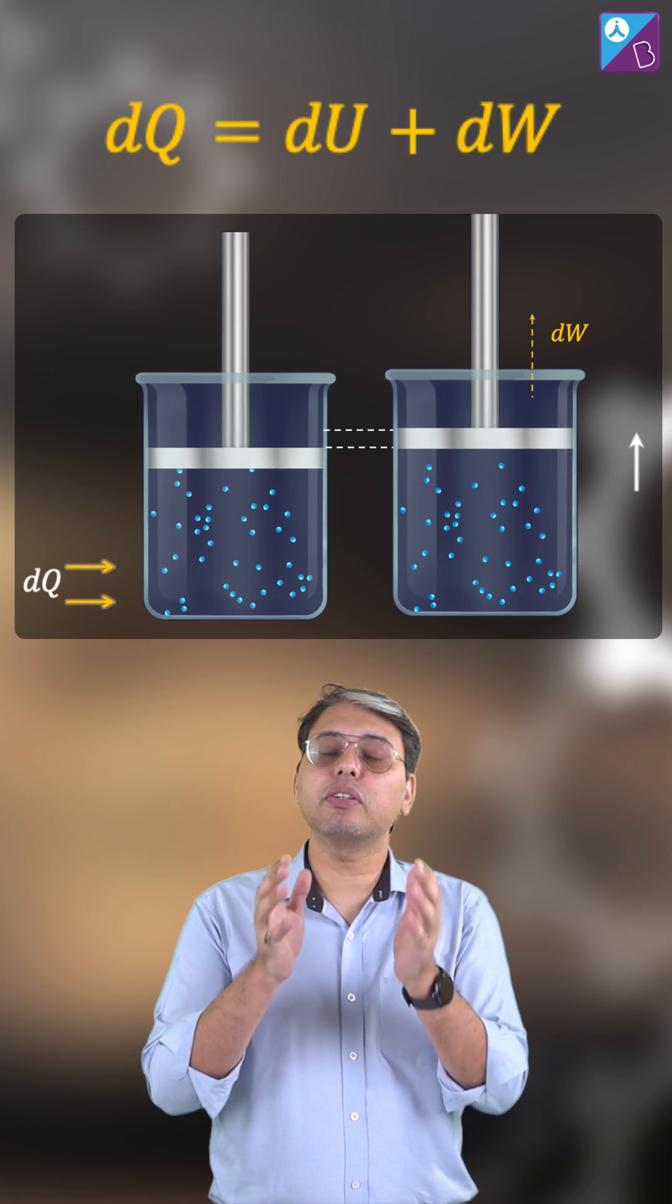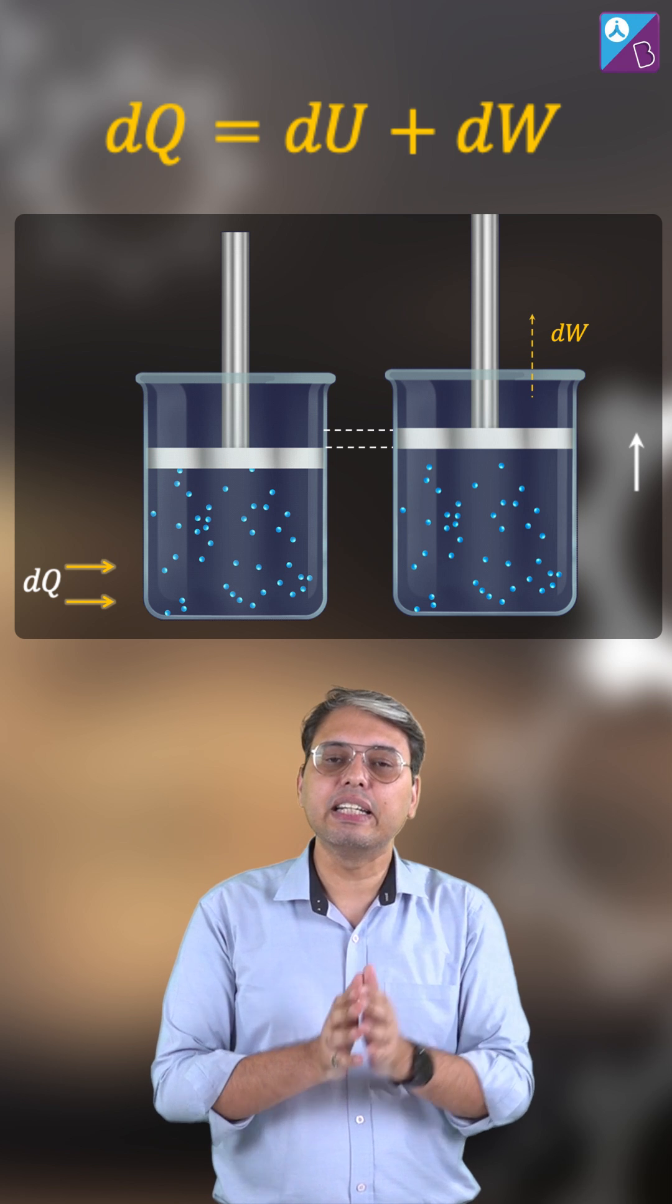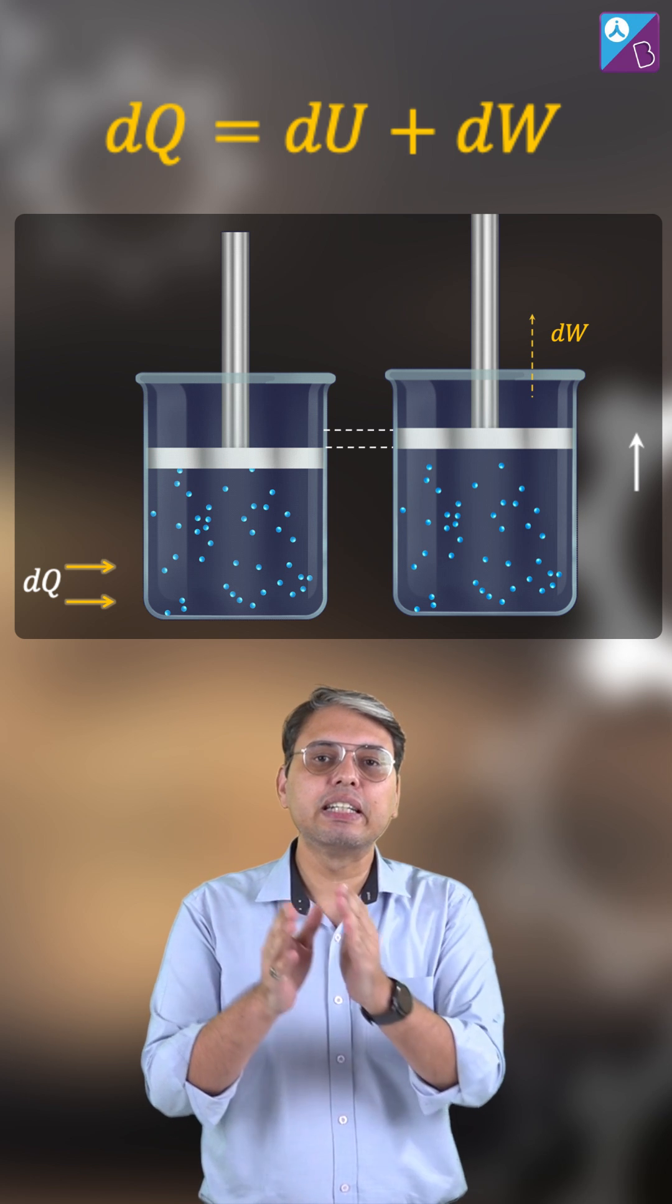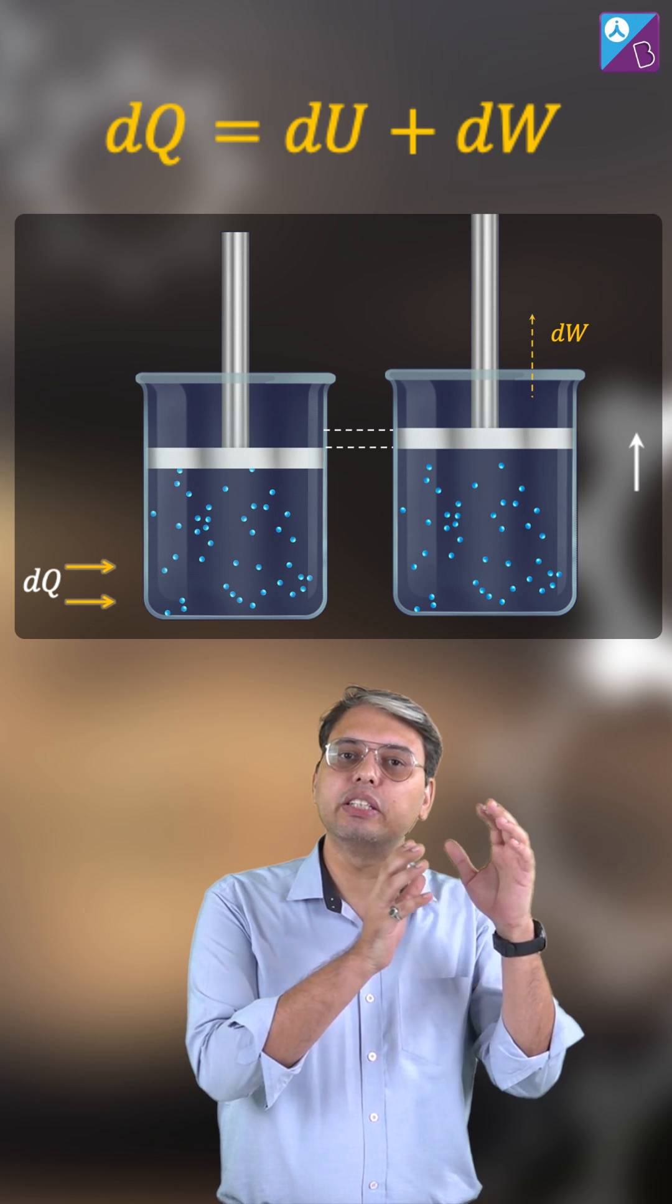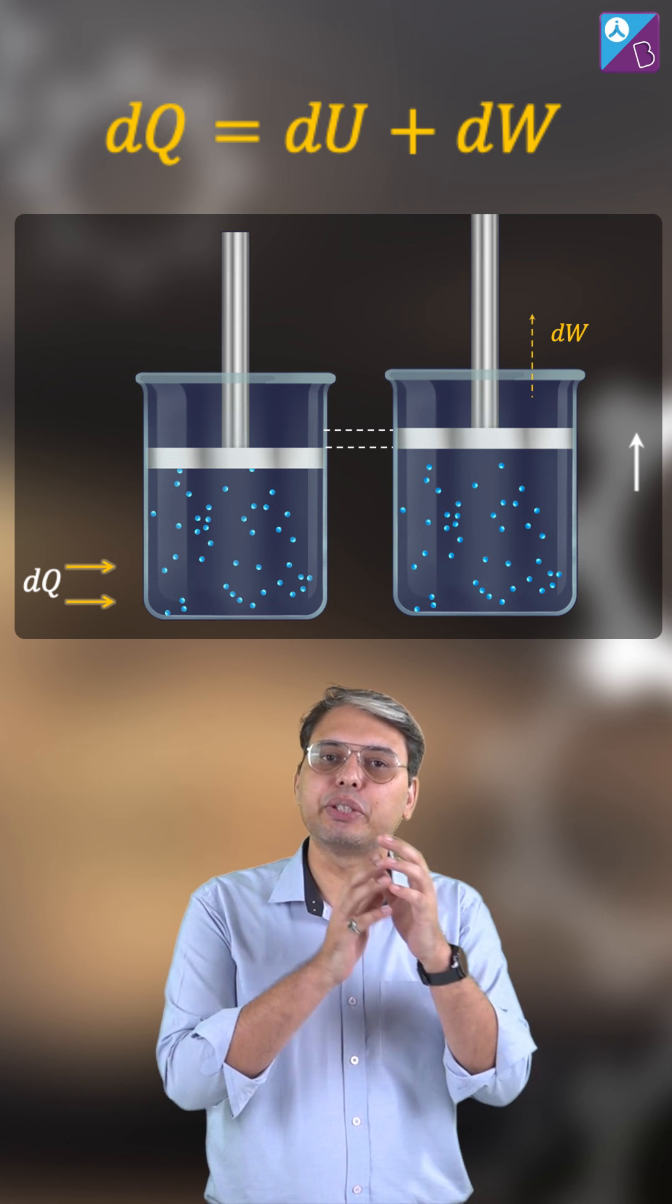So because of that, because of the principle of conservation of energy here, dQ can be written as dU plus dW, as dU and dW are just the parts of the dQ that was the heat supplied to the system.